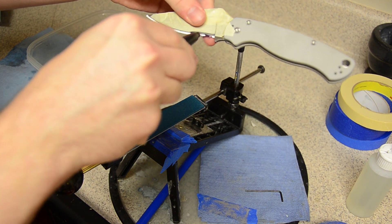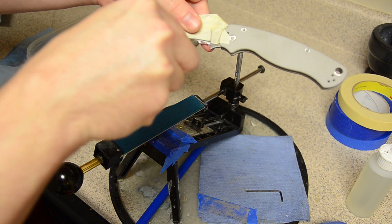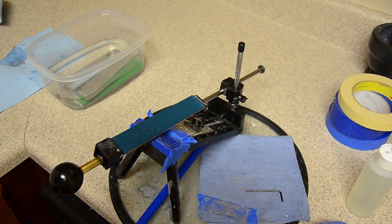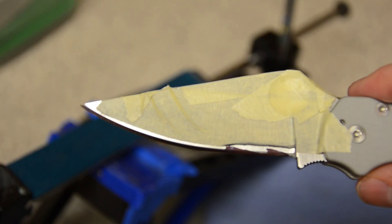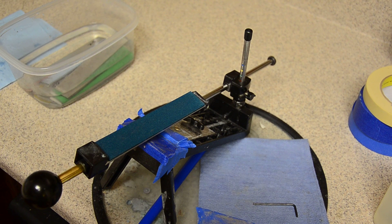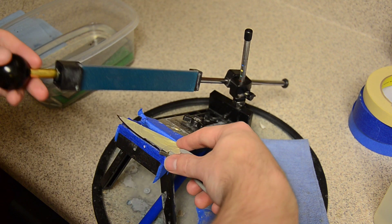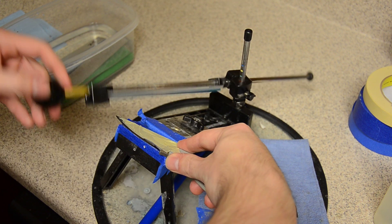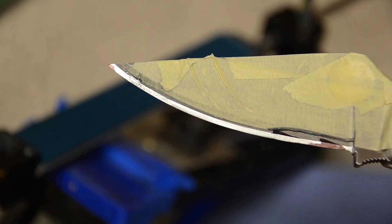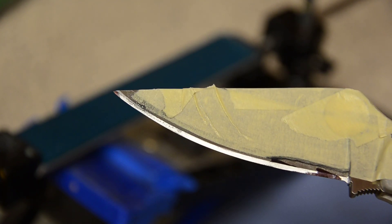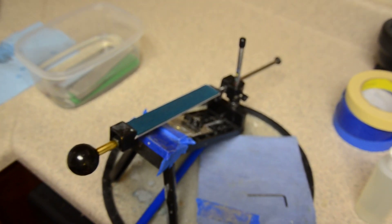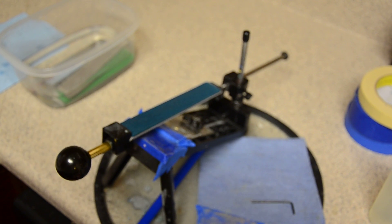This stone is going to match the bevel that I ground onto this knife perfectly, and I'll show you that by just marking the edge with sharpie. You see that the edge is completely covered with sharpie. I'm going to just rub the sharpie off, and you see that the angle matches my angle perfectly. It has rubbed 100% of the sharpie off from the top to the bottom. That's what we want. That means that we are matching the bevel that we ground onto the knife perfectly.